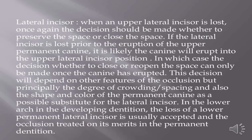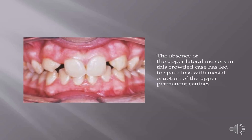For the lateral incisor: when an upper lateral incisor is lost, the decision must be made whether to preserve or close the space. If the lateral incisor is lost prior to eruption of the upper permanent canine, it is likely the canine will erupt into the lateral incisor position. The decision whether to close or reopen the space can only be made once the canine has erupted, and will depend on the degree of crowding or spacing and the shape and color of the canine as a possible substitute for the lateral incisor. In the lower arch, loss of a lower permanent lateral incisor is usually accepted and the occlusion treated on its merits in the permanent dentition. The absence of upper lateral incisors in a crowded case has led to space loss with mesial eruption of the upper permanent canines.